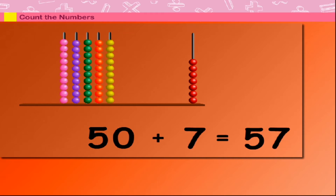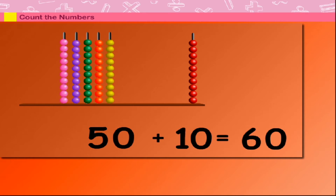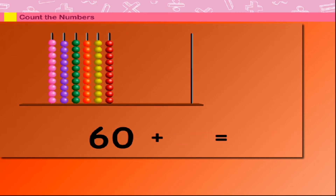50 plus 7 is equal to 57. 50 plus 8 is equal to 58. 50 plus 9 is equal to 59. 50 plus 10 is equal to 60.